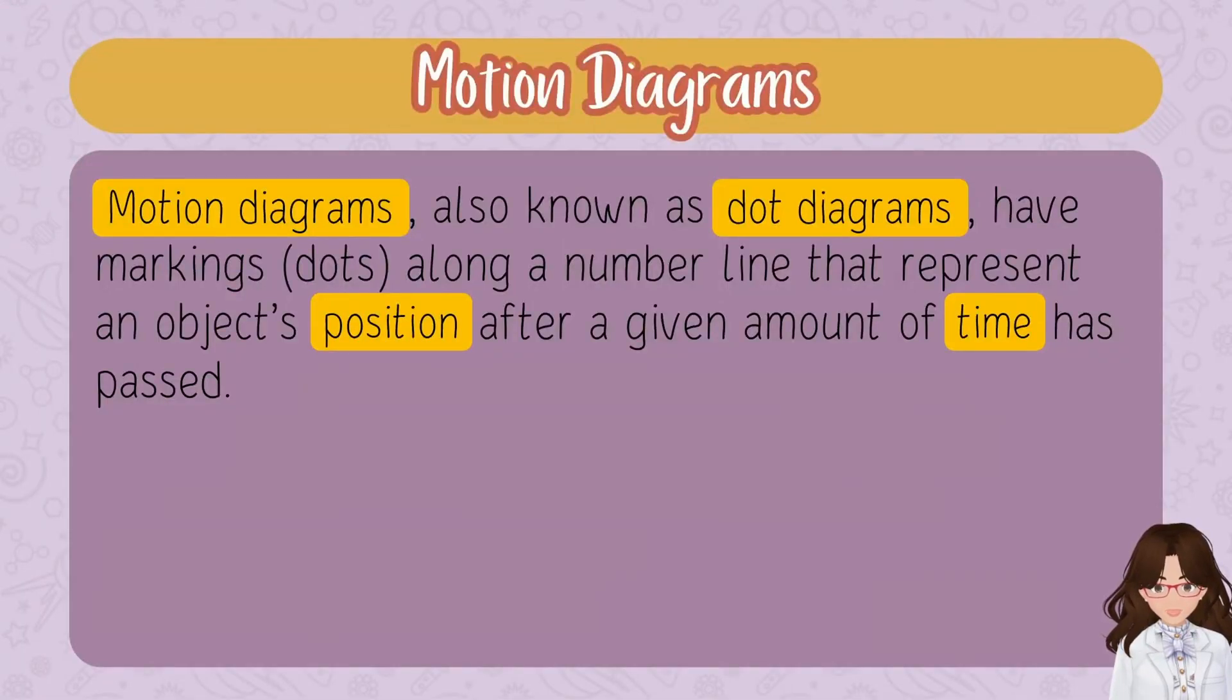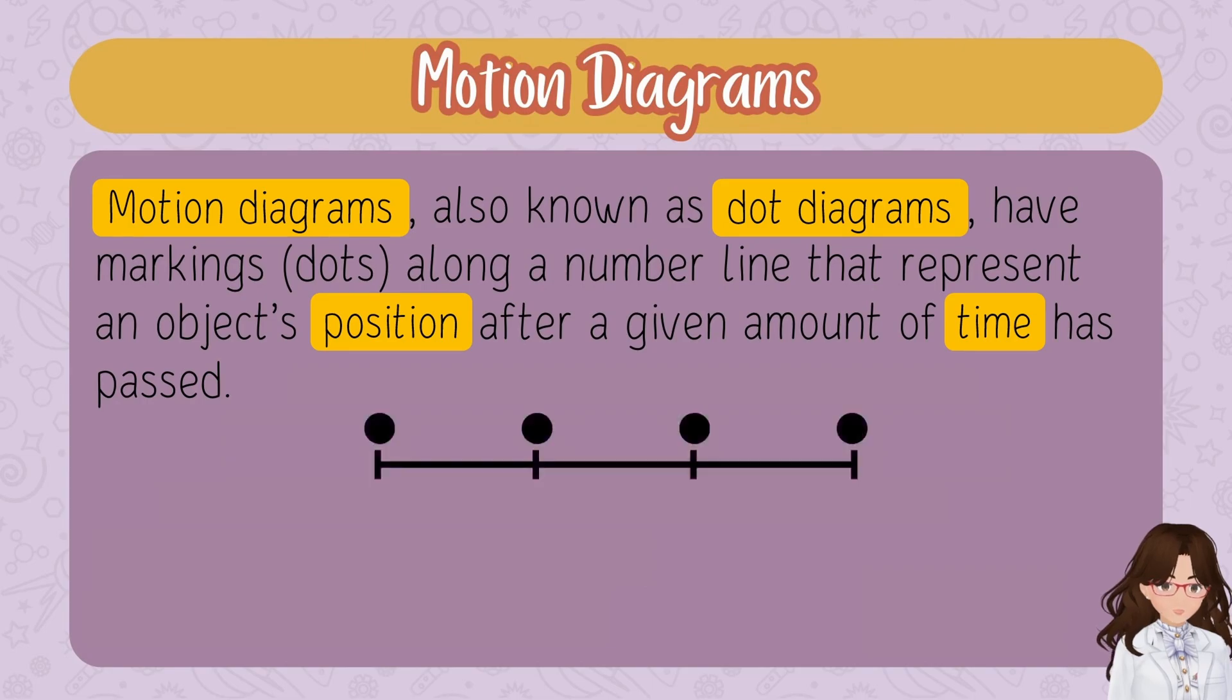Let's start by talking about motion diagrams. They're also known as dot diagrams and have markings along a number line that represent an object's position after a given amount of time has passed. Oftentimes you'll see dots located along a line that may or may not have dashes through it. Sometimes ticker tape has dashes, dot diagrams usually use dots. It's just the preference and the setting in which you're given a motion diagram.